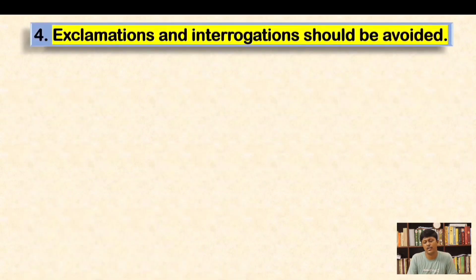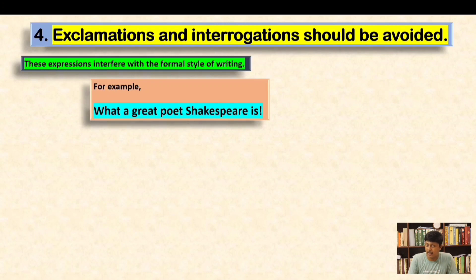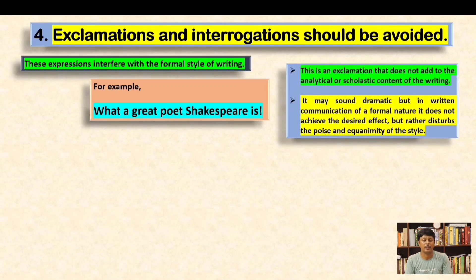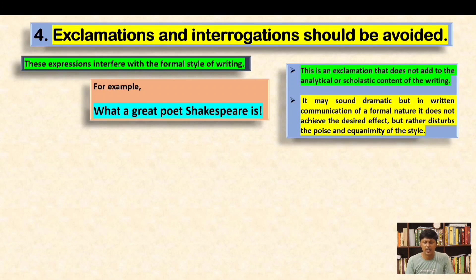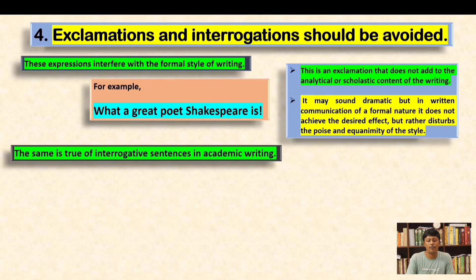Convention four: exclamations and interrogations should be avoided, as these expressions interfere with the formal style of writing. For example, 'What a great poet Shakespeare is!' is an exclamation that does not add to the analytical or scholastic content of the writing. It may sound dramatic but in formal written communication it disturbs the poise and equanimity of the style. Impersonality is very much needed in academic writing, so exclamations must be omitted.